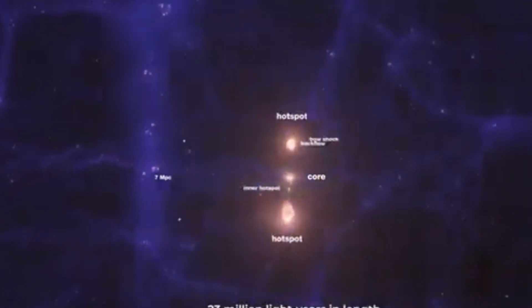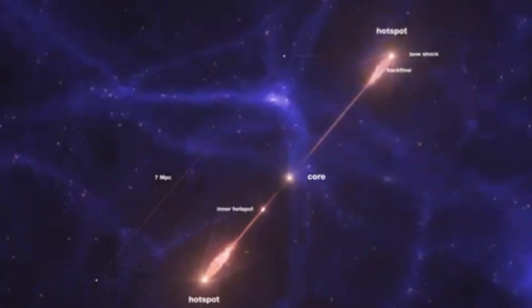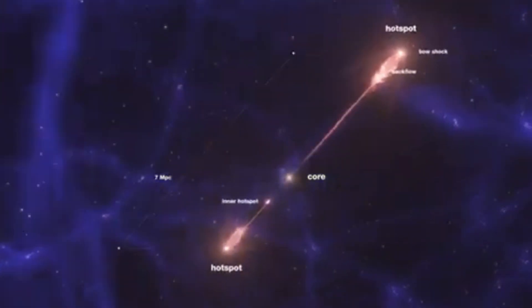The jets that blast from the north and south pole of the black hole are so massive that they emit trillions of times the energy of the sun.